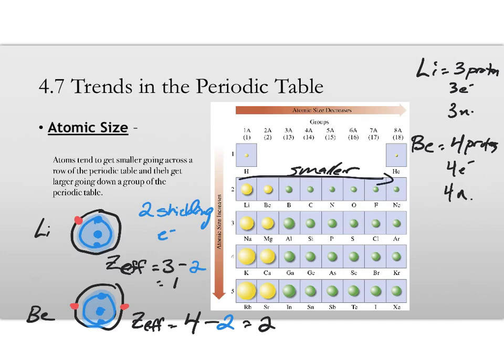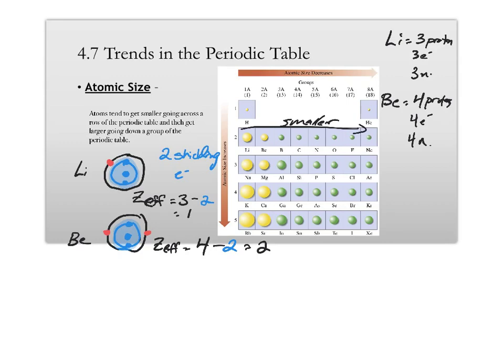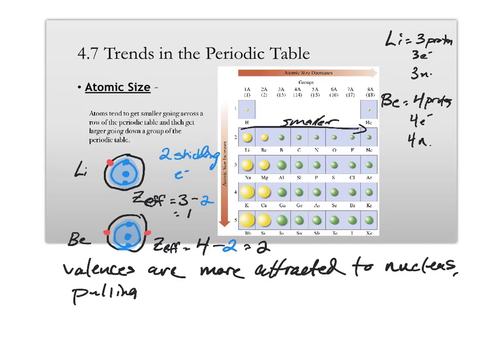And, therefore, they get pulled in closer to the nucleus, which makes the atoms smaller. And this property is going to repeat going across the periodic table. The valence electrons are more attracted to the nucleus, pulling them in more, making the atoms smaller.